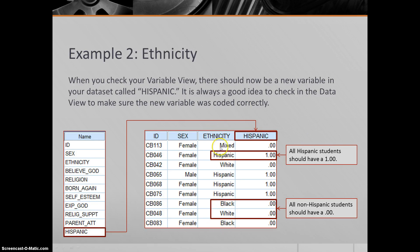We can go down the list here and see all the ethnicities: mixed, Hispanic, white, Hispanic, black, white, and so forth. So every time you see Hispanic, you should see a one. So Hispanic, one; Hispanic, one; Hispanic, one. Everyone else, regardless of what their ethnicity is, should have a zero. So mixed, zero; white, zero; black, zero; white, zero; black, zero. Everyone else should have a zero because this variable is just telling us whether you are Hispanic or not.